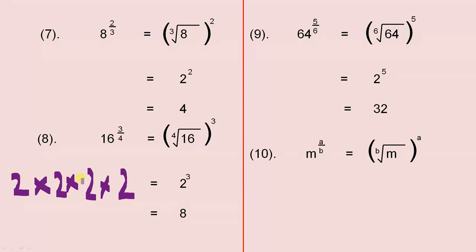You've got 4 numbers multiplied together to give you 16, and the number is 2, so the fourth root of 16 is 2. That's how we get the 2 under here. Then when we cube it, we get 8.